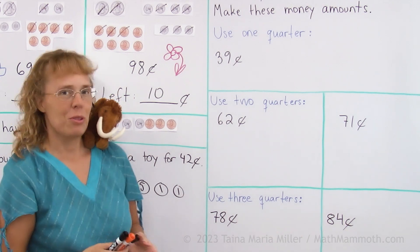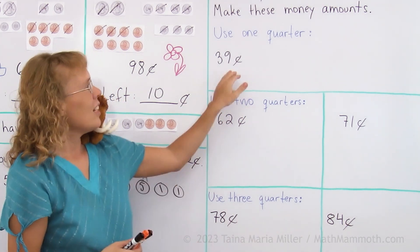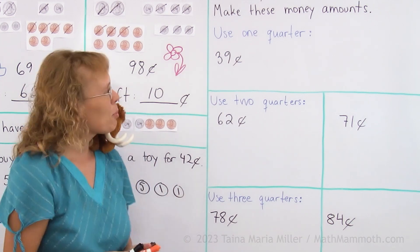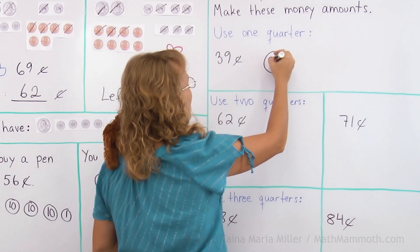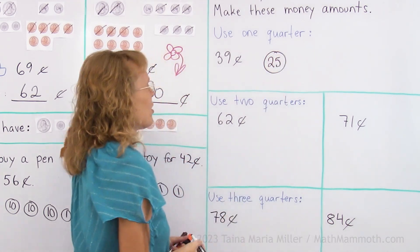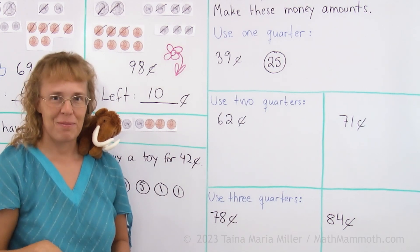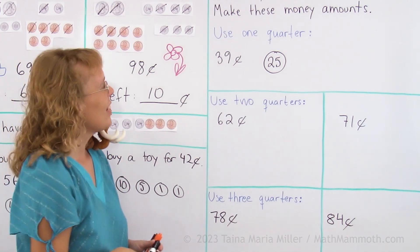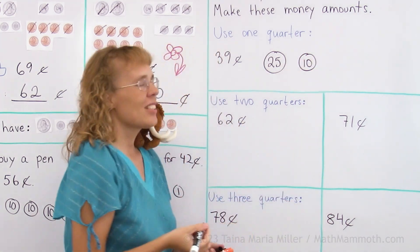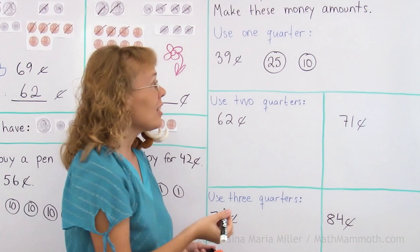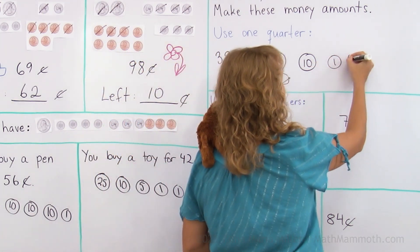Over here, we're going to make these money amounts, 39 cents and these others. Here use one quarter, that helps us, we need to use one quarter. So again, I just draw my coins like this, that's my quarter. Now what else will I need? Pause the video and try it yourself. 25 and then I'll take a dime, 10 cents, so that's 35, right? And just some pennies needed after this.